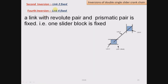To obtain the second inversion, link number 2 is fixed. Or we can say that a link with a revolute pair and a prismatic pair is fixed. Link number 2 has one revolute pair with link number 3 and it forms one prismatic pair with link number 1. So when we fix link number 2, we will get second inversion. Similarly, link number 4 also forms one revolute pair with link number 3 and one prismatic pair with link number 1.